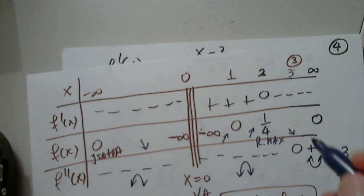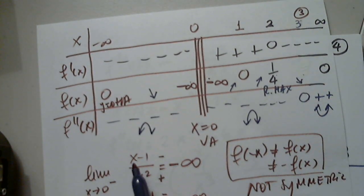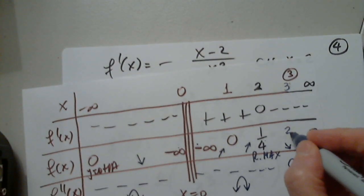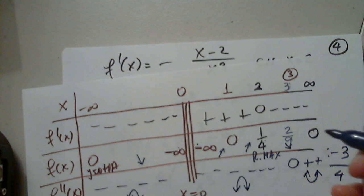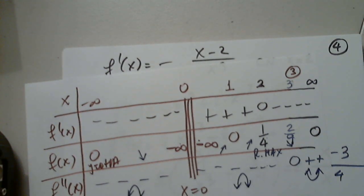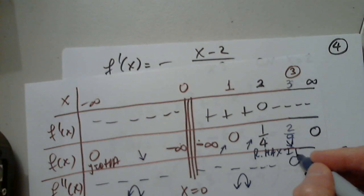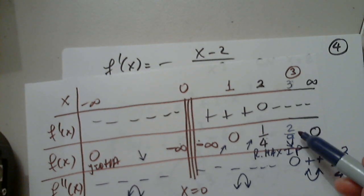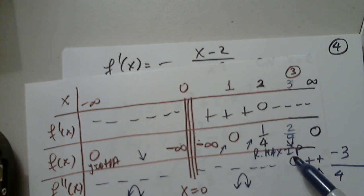And I have to plug in 3. When I plug in 3, I get 3 minus 1, which is 2 over 9. Of course. 1 over 4 or 2 over 9. How would I graph that? I'll find a way. Okay, so that's it. So this is the IP. 3 comma 2 over 9 is the inflection point.